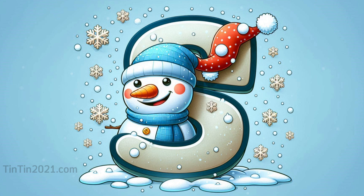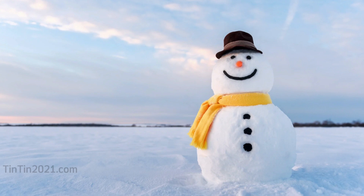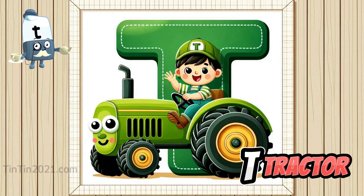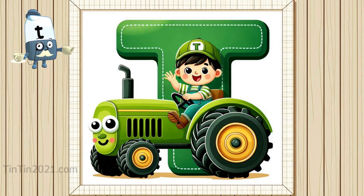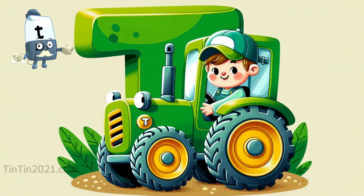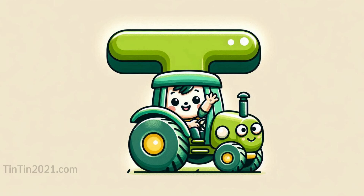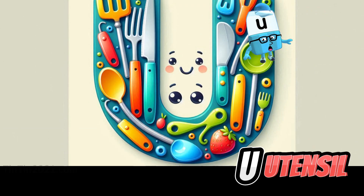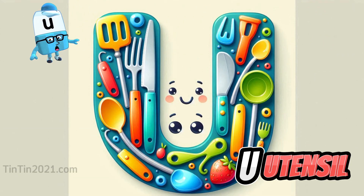The letter S is for Snowman. The letter T is for Tractor. The letter U is for Udenso.